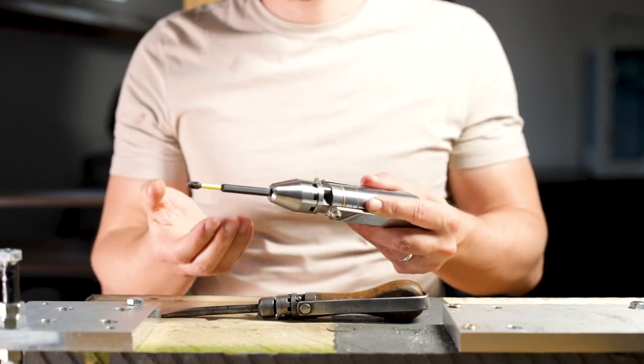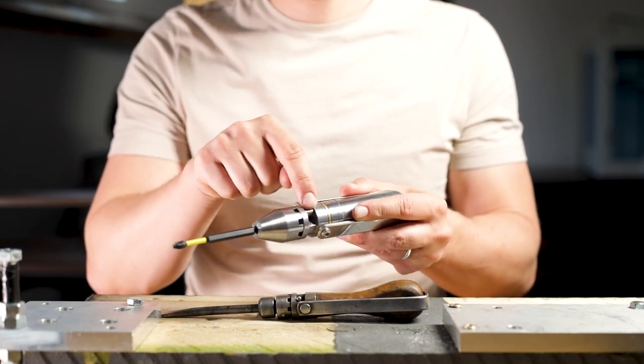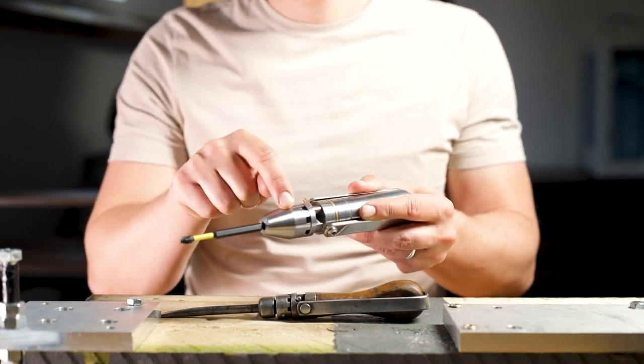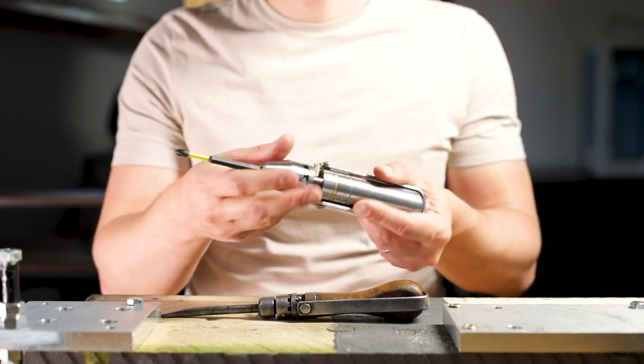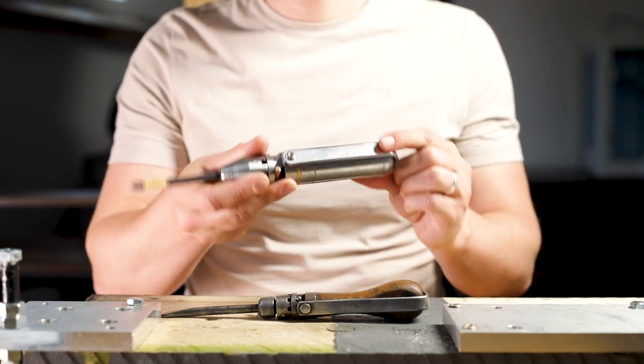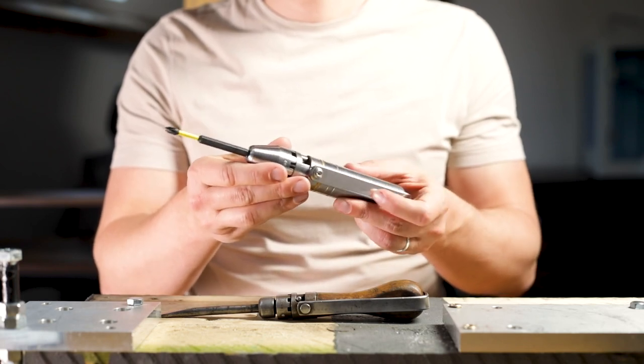We've also upgraded the metals, with the pin being a hardened tool steel and the chuck a hardened martensitic stainless steel, along with a few other tweaks to make everything much stronger than the original.